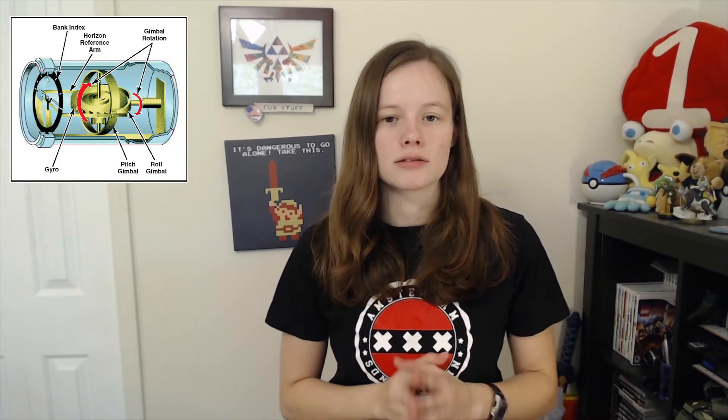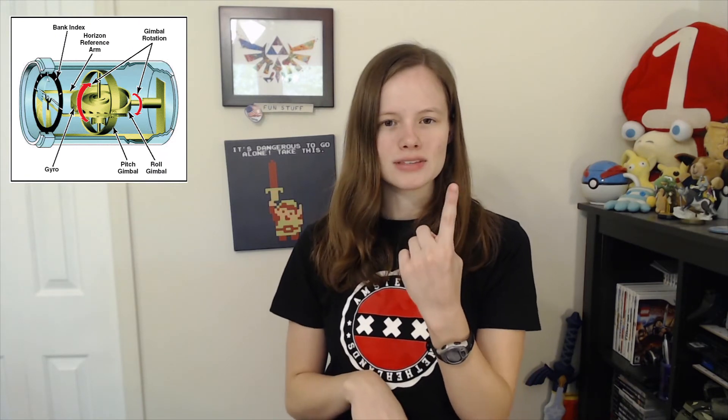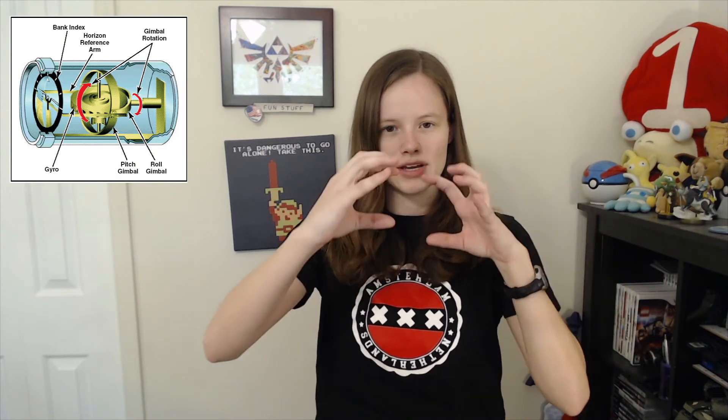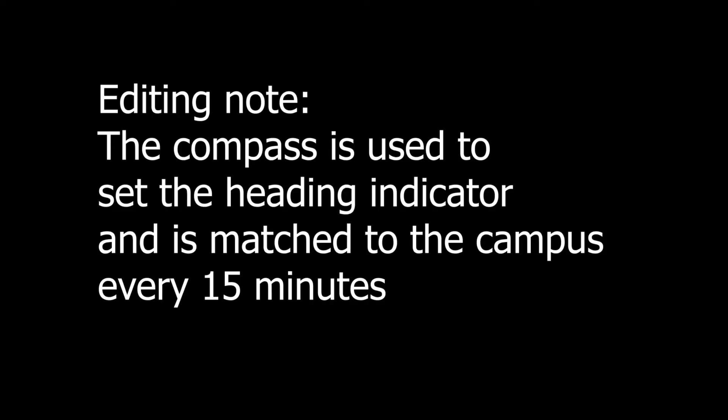A gyroscope is the basis for several instruments in an airplane. Think of a spinning top — if you rotate it, it shifts its orientation along with the center point. There's a rotor spinning perpendicularly to the surface, which is how the attitude indicator works, showing the artificial horizon. It also drives the heading indicator, which shows the pilot their direction and is cross-referenced with the compass. There is also an electrically-based instrument called the turn coordinator, which shares the artificial horizon information.